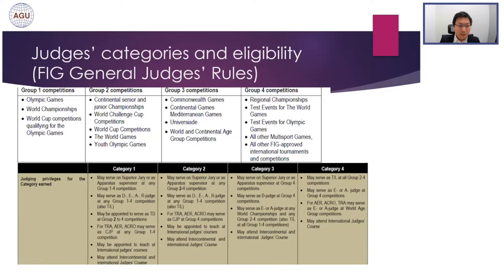Regarding judges categories, as a difficulty judge, it requires a lot of experience to take up this task. According to the FIG judges rules, in most cases, judges need to possess at least category three or above in order to serve as a D-judge in FIG competitions. For details, you may refer to the PDF documents available on the FIG website.